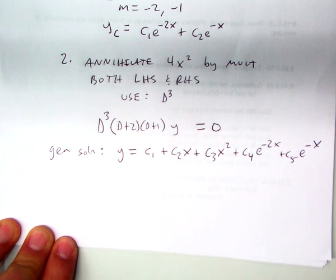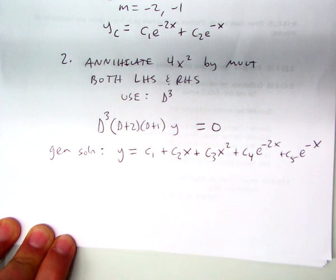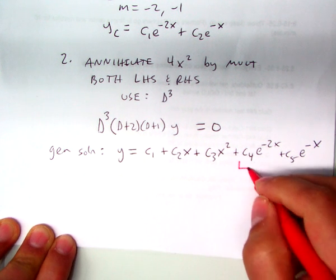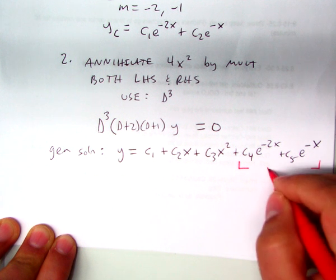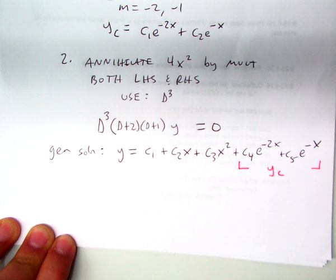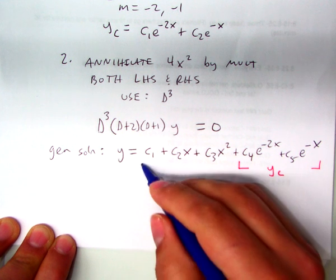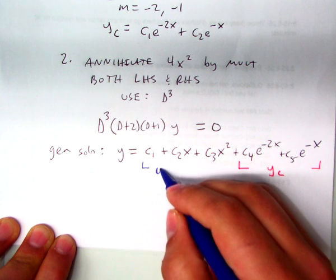So this is what the general solution looks like. This, we already found. This was the complementary function, right? Which means then that, by default, this stuff over here is your particular solution.